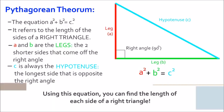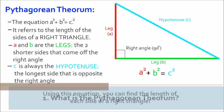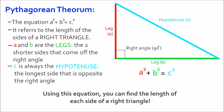So first up, what is the Pythagorean theorem? It is the equation A squared plus B squared equals C squared, and it refers to the length of the sides of a right triangle. A and B are the legs, which are the two shorter sides of the right triangle that come off of the right angle, and C is always the hypotenuse, which is the longest side that is opposite the right angle. Using this equation, you can find the length of each side in a right triangle, because you know that when you square each of the legs and add them together, it always equals the square of the hypotenuse.